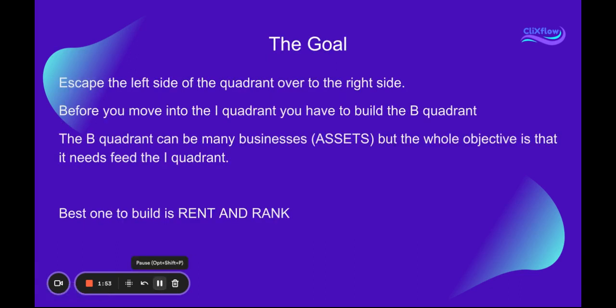The ultimate goal with the Cashflow Quadrant is to escape the left side and move to the right side — that's building a business. And before you can move into the investor side, you have to build a business. I think Rent and Rank is definitely an asset, a digital asset — kind of like digital real estate — where you build something and rent it out to a business owner. That business owner is going to pay you rent every month, basically forever, unless they cancel. And if they do cancel, like a tenant leaving, you just find a new tenant for that website. The whole goal is that you own the website, it produces leads, and those leads generate more money for the business owner. That's why I think Rent and Rank is probably one of the best businesses for 2023.